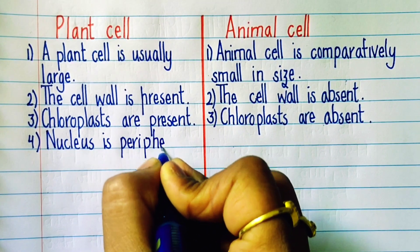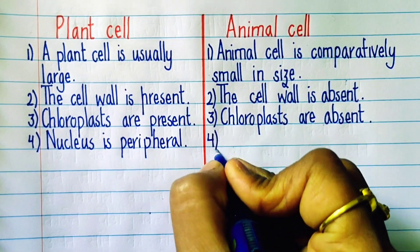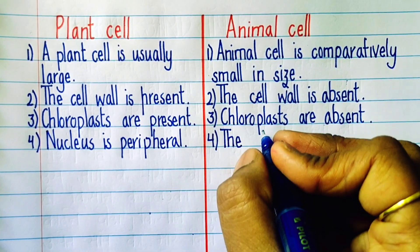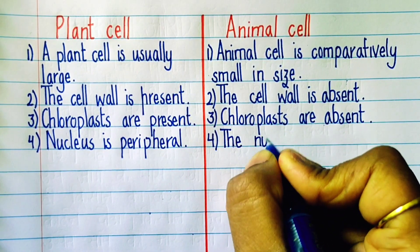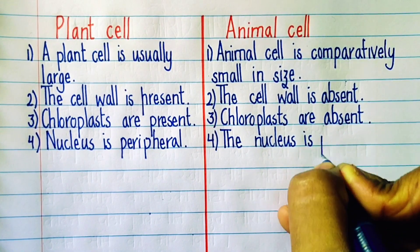Fourth point: Nucleus is peripheral in case of plant cells, which means it is present towards the side, whereas in case of animal cells the nucleus is present in its center.